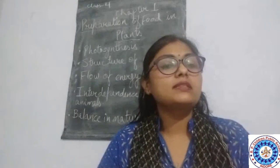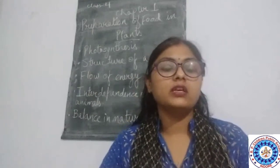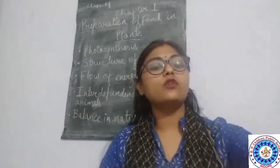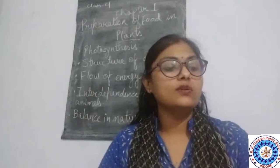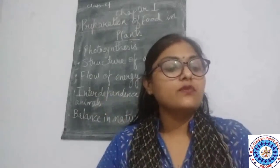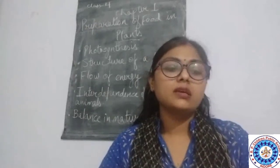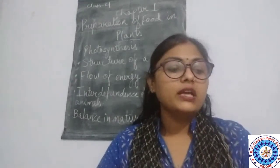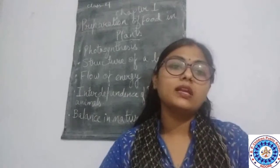Utilization of prepared food: once the food is prepared, it is transported to various parts of the plant to give energy. It is also used for the formation and growth of new cells. It is stored food which is eaten by human beings. Now you know why we eat different parts of plants.